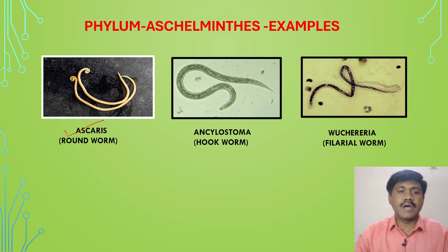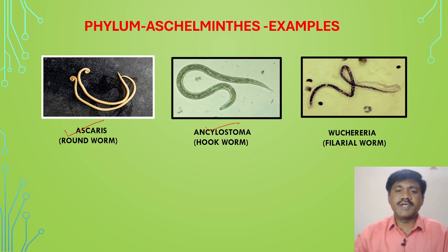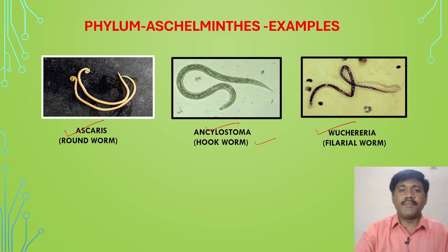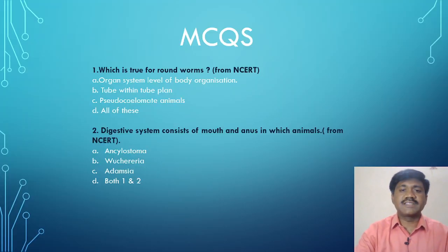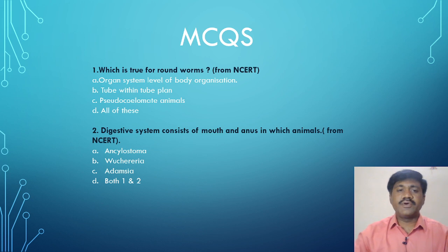Examples of Aschelminthes: Ascaris, commonly known as the roundworm; Ancylostoma, commonly known as the hookworm; and Wuchereria bancrofti, commonly known as the filarial worm. These are the examples for phylum Aschelminthes.